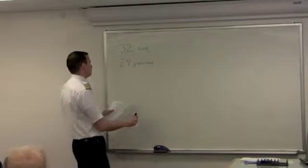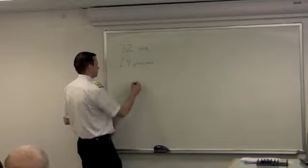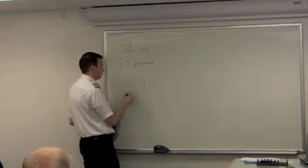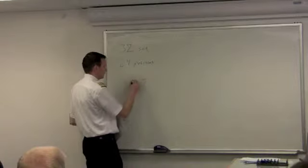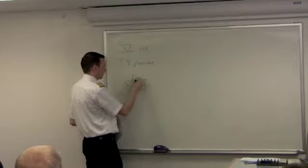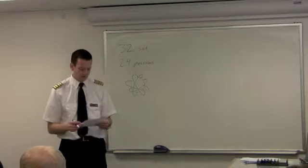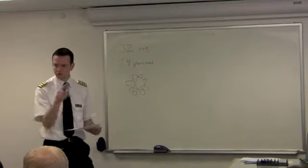Okay. So 32 satellites, 24 positions, six orbital planes. So you've got your Earth. And so they're just like a big old atom. There's like all these orbital planes that go around the Earth. Six of them. So there's four satellites in each orbital plane.